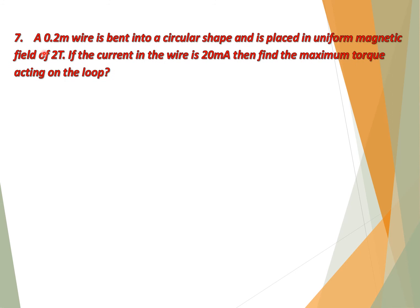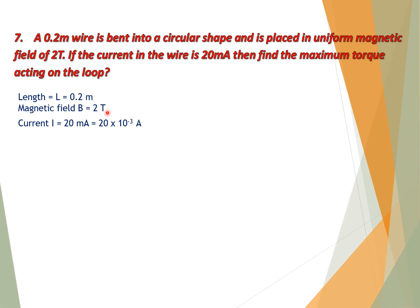Question number 7: A 0.2 meter wire is bent into a circular shape and placed in a uniform magnetic field of 2 tesla. If the current in the wire is 20 milliampere, find the maximum torque acting on the loop. Given: L = 0.2 m, B = 2 T, I = 20 mA.